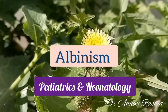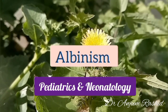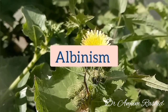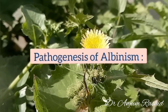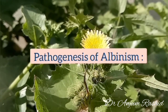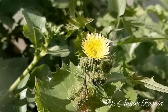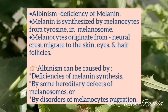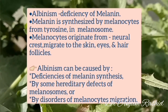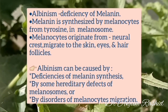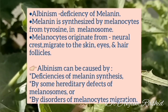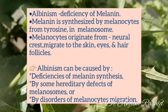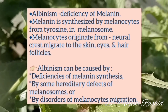Welcome to Pediatrics and Neonatology. This video is about albinism. First, I will discuss the pathogenesis of albinism. Albinism is due to deficiency of the pigment melanin. Melanin is synthesized by melanocytes from tyrosine in the intracellular melanosomes.